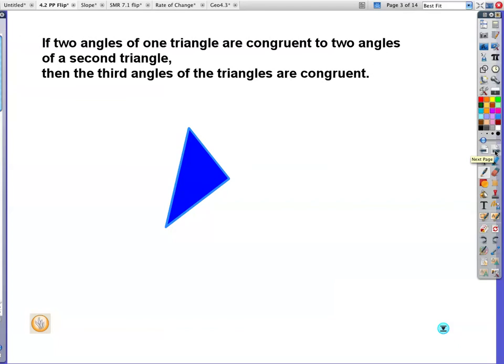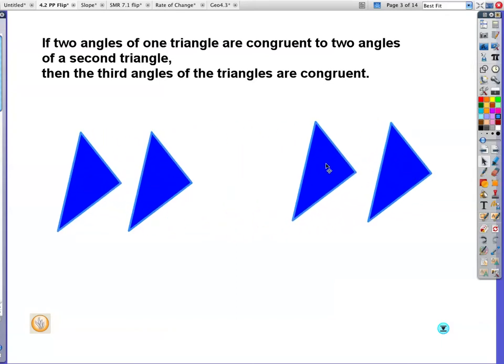If two angles of one triangle are congruent to two angles of a second triangle, then the third angles of the triangles are congruent. I actually don't want you to write that down, but you can. I'm going to set this up so we've got a picture. So if I see this triangle and this triangle have those angles congruent, and these are congruent. So if you see this picture right here, guess what you can automatically do when you see it again?